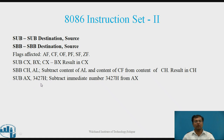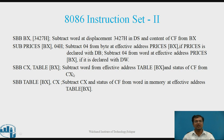SUB AX, 3427h — subtracts immediate number 3427h from AX. Other examples: SBB BX, 3427h. SBB [Price+BX], 04. SBB CX, Table[BX]. SBB Table[BX], CX.